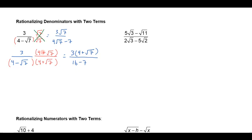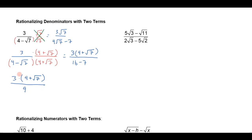Now notice that I didn't distribute the 3 through on the top, and the reason I didn't do that is because 16 minus 7 is 9, and then I can cancel the 9 with the 3 here. So that's a good practice to hold off distributing the 3 through, or maybe just leave it factored out if you don't need to, because it might cancel with something in the denominator. So I've got this in the numerator, I'll get 9 in the denominator, and then because these are factors I can cancel that.